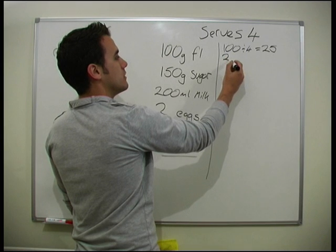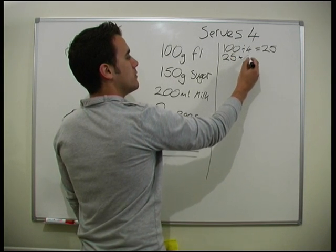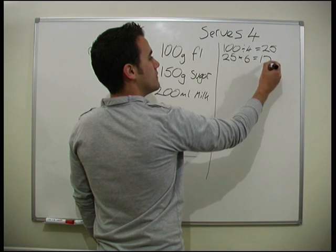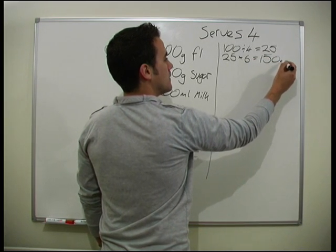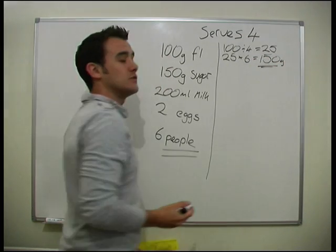And then just times that by 6. So we're going to do 25 times by 6, which is 150 grams. So that's what we need for flour.